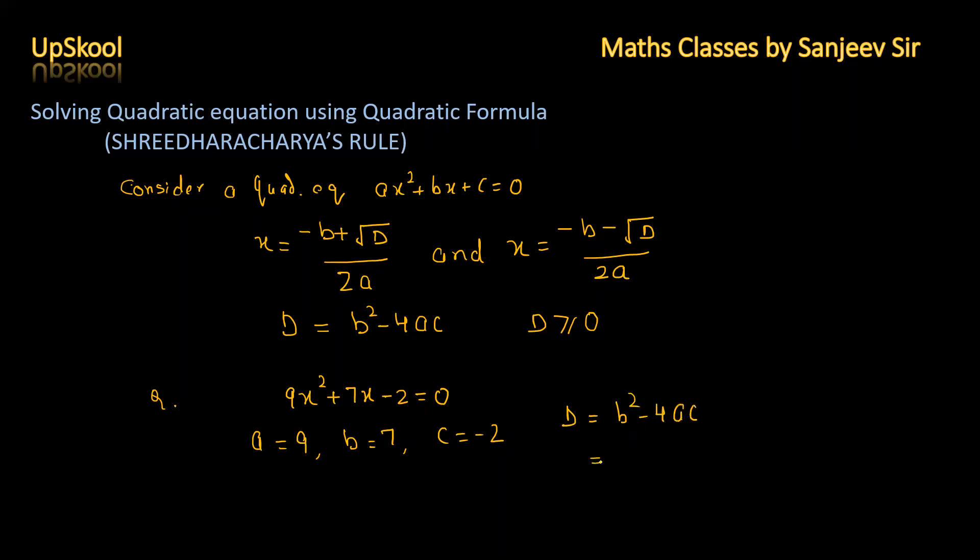Here b is 7, so 7 squared minus 4 times 9 times minus 2. That is 49 plus 72. That comes out to be 121. So d is 121.